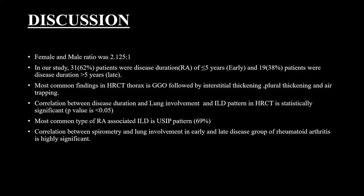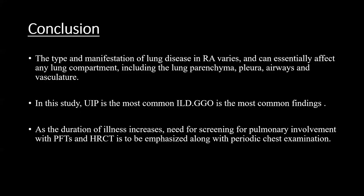In discussion, the female-to-male ratio was 2:1. In our study, 62% of patients had disease duration of less than 5 years and 38% had more than 5 years. The most common finding on HRCT Thorax was GGO, followed by interstitial thickening, pleural thickening, and air trapping. Correlation between disease duration and lung involvement and ILD pattern on HRCT is statistically significant. The most common type of RA-associated ILD is the UIP pattern. We conclude that lung disease in rheumatoid arthritis varies and can affect any lung compartment including parenchyma, pleura, airways, and vasculature. As the duration of illness increases, screening with PFTs and HRCT should be emphasized along with periodic chest examination.